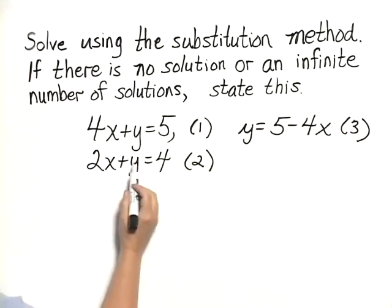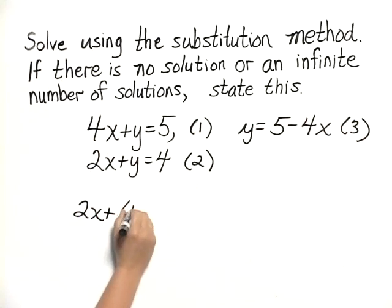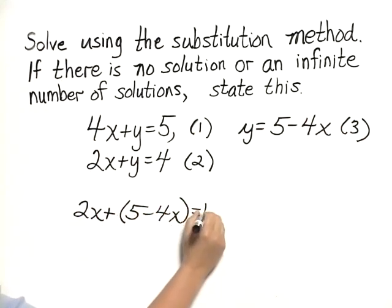So where I have a y, I'm going to put 5 minus 4x. So I have 2x plus 5 minus 4x equals 4.